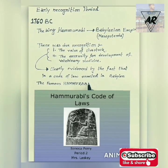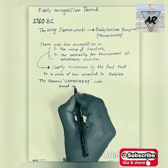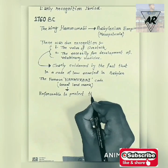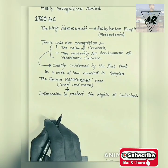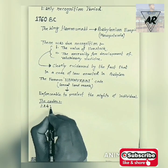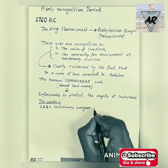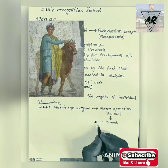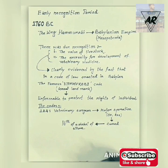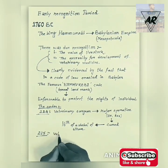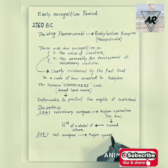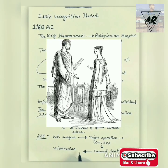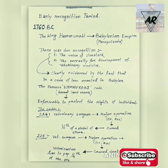The famous Hammurabi Code provided a legal framework for a moral code that was enforceable and was a great landmark in the emergence of protection of individual rights. The code included rules for veterinary work, with a medical focus on surgical interventions. Code 224 states: 'If a veterinary surgeon performed a major operation on an ox or an ass, he shall give to the doctor one-sixth of a shekel of silver as his fee.' Code 225 states: 'If a veterinary surgeon performed a major operation on an ox or an ass and caused its death, he shall give to the owner one-fourth of its value.'